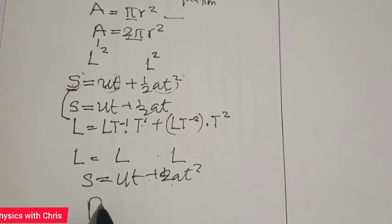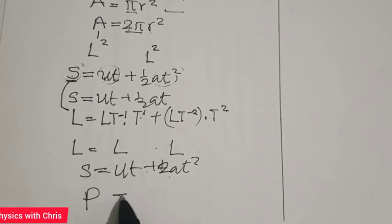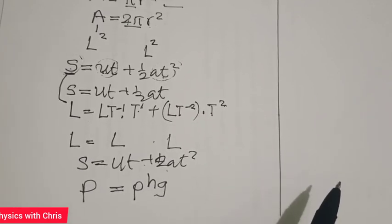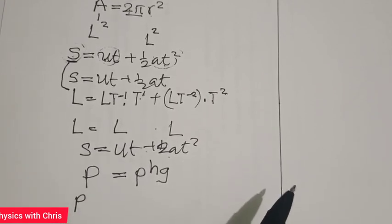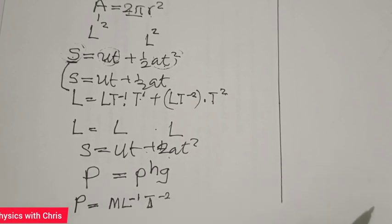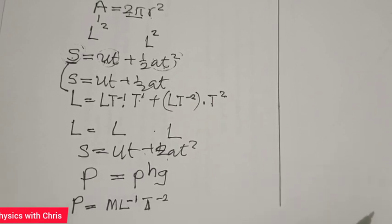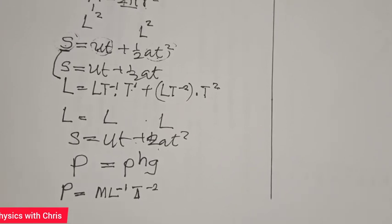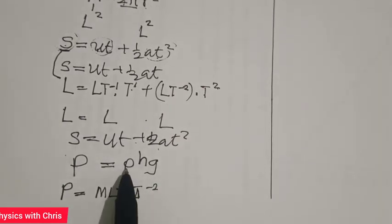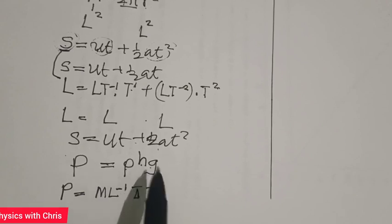Now consider the equation pressure equals density times height times acceleration due to gravity. How do we show this equation is dimensionally correct? Pressure, which is force over area, has dimensions ML⁻¹T⁻². To confirm this equation is dimensionally correct, the dimension of pressure must equal the dimension of the product of density, times height, times acceleration due to gravity.